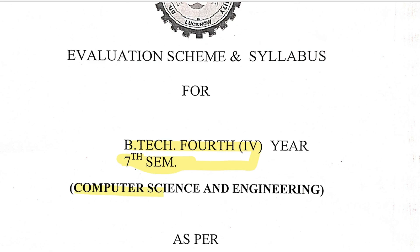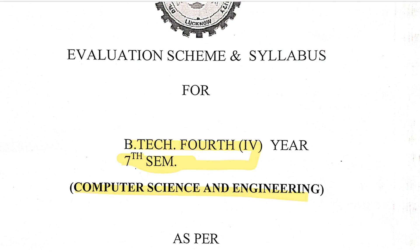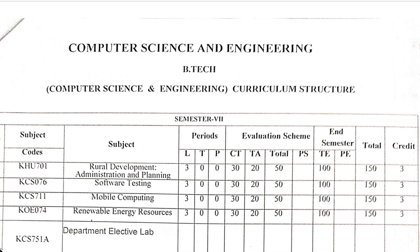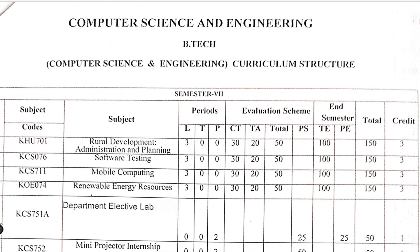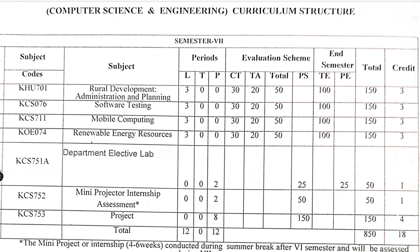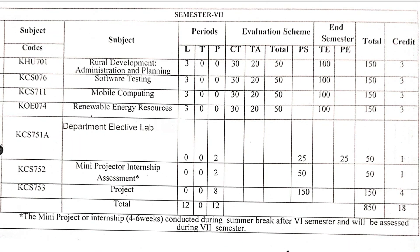Our syllabus will be for computer science students. The session will be 2024 and 2025, which is what we are doing here. First of all, we will see the subjects that are going to be in the 7th semester, then we will see all the subjects that are important. Let us look at their details.